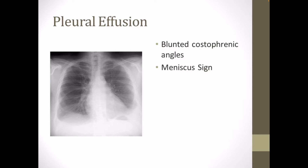Chest radiographs are the most commonly used examination to assess for the presence of pleural effusion. However, it should be noted that in a routine erect chest x-ray examination, as much as 250–600 ml of fluid is required before it becomes evident. A lateral decubitus projection is most sensitive, able to identify even a small amount of fluid. At the other extreme, supine projection can mask large quantities of fluid.